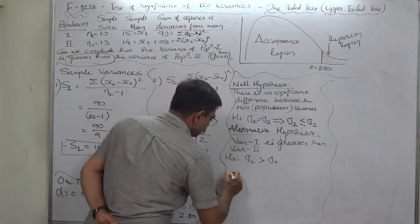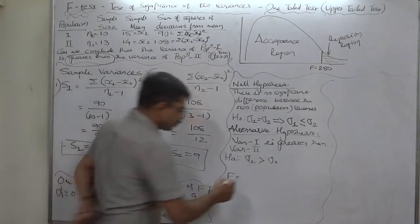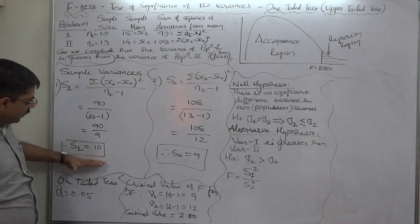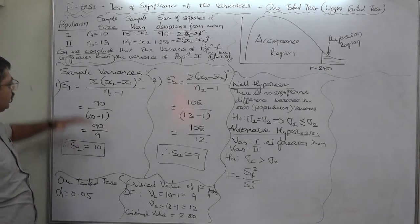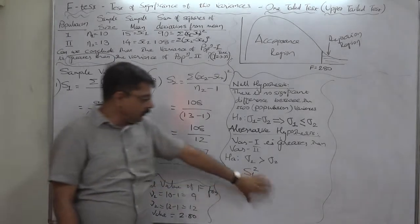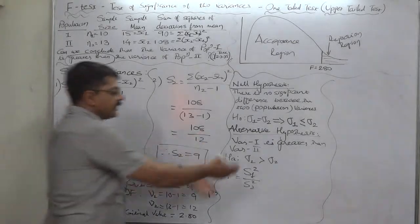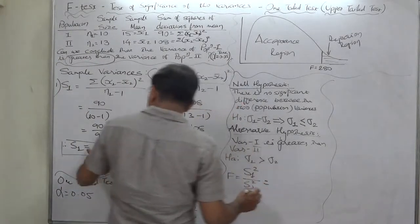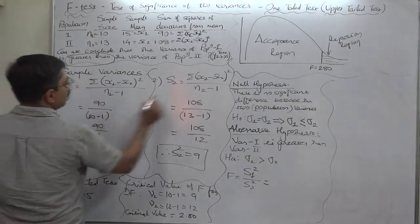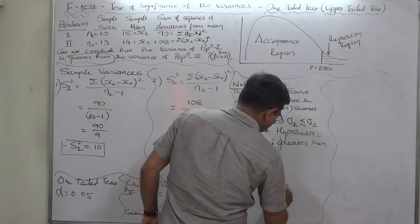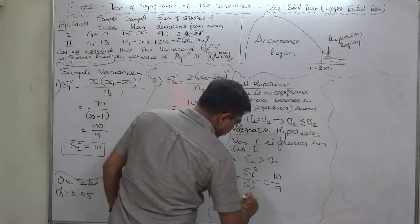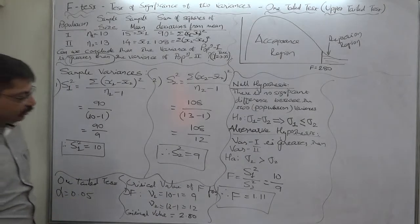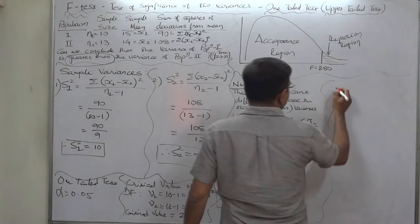For the test statistic, the F-ratio = S1² / S2². The higher sample variance is always considered as the sample variance from the first population, and it goes in the numerator. Substituting, S1² = 10 and S2² = 9, so 10 / 9 = 1.11. The calculated F-ratio is 1.11.